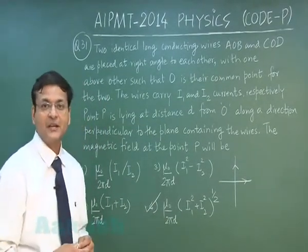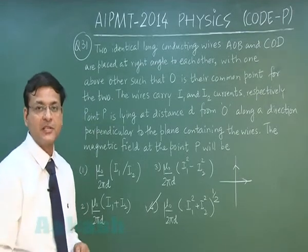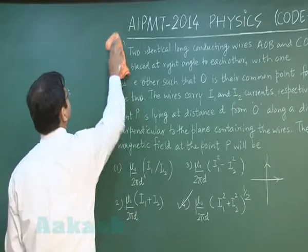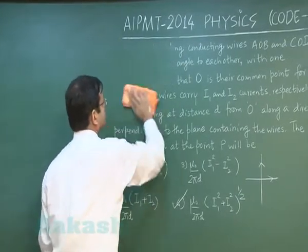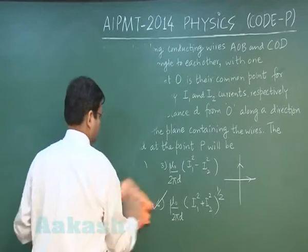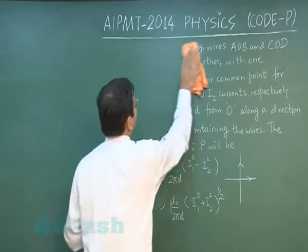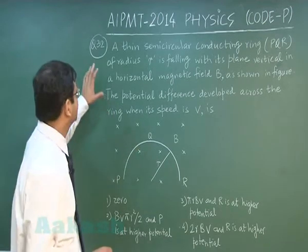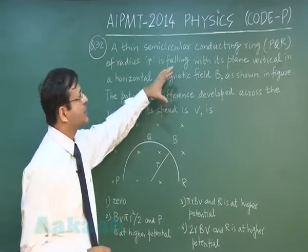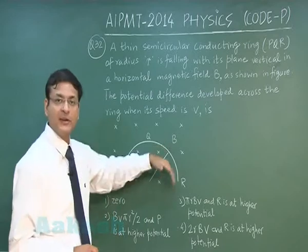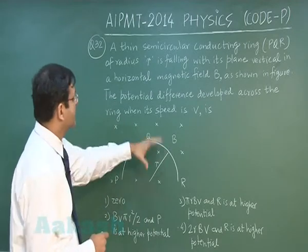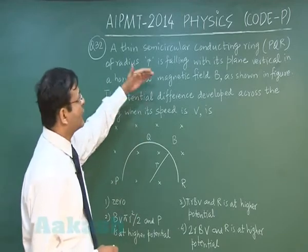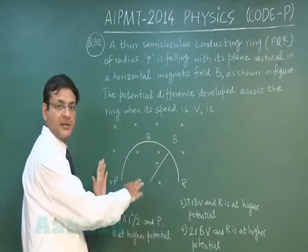Now let us explain question number 32. In the next question that is question 32, a thin semicircular conducting ring PQR has been given to you in the diagram. PQR is the ring of radius small r that has been mentioned here, is falling with this plane vertical as it has been shown here.